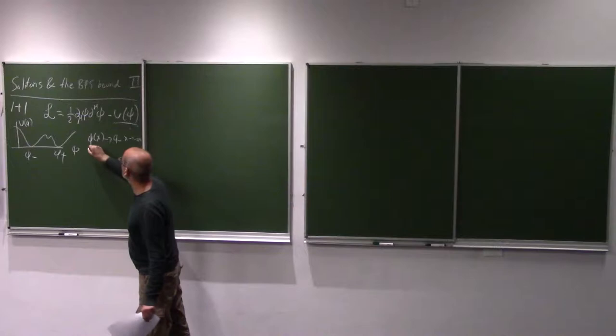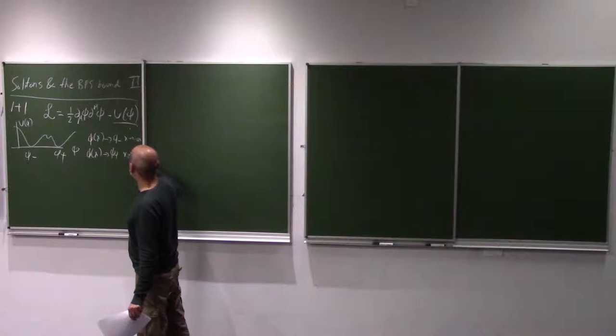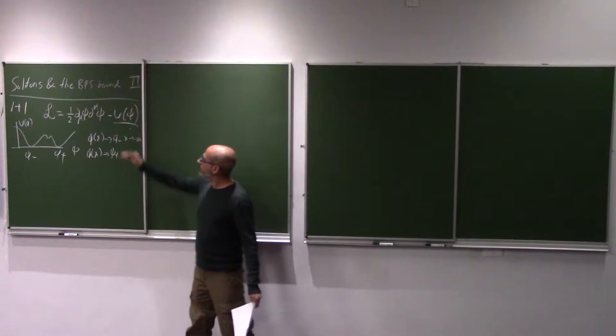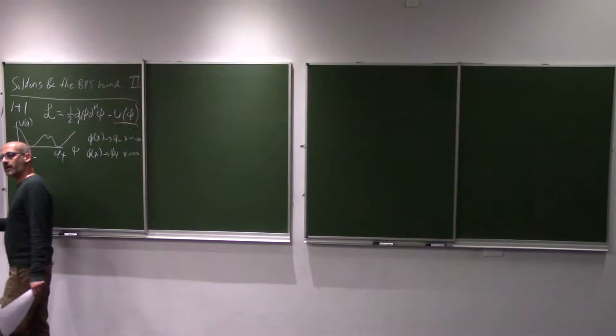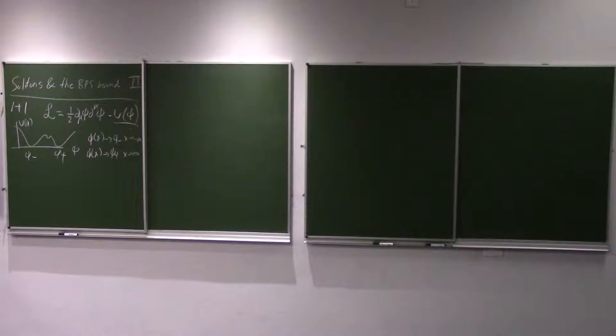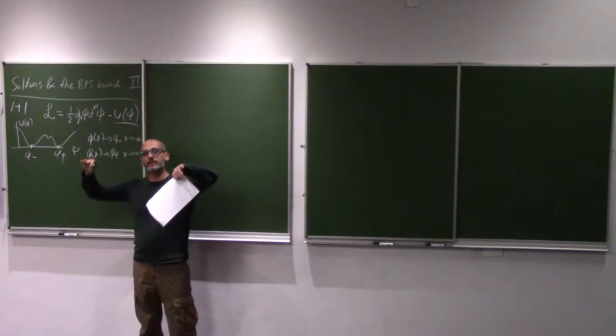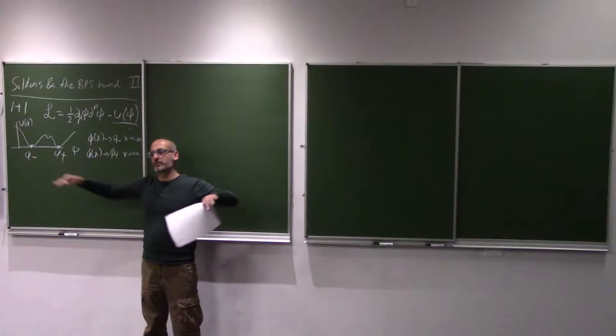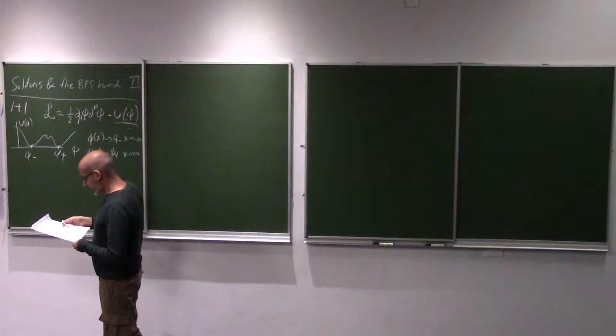These are the vacua, because these are field configurations — constant phi — where if you minimize the energy from this kind of Lagrangian, you end up with these as the vacuum. We care about solutions which interpolate between these vacua: phi(x) goes to phi-minus as x goes to minus infinity, and phi(x) goes to phi-plus as x goes to plus infinity. We want a static solution that doesn't depend on time but allows dependence on space.